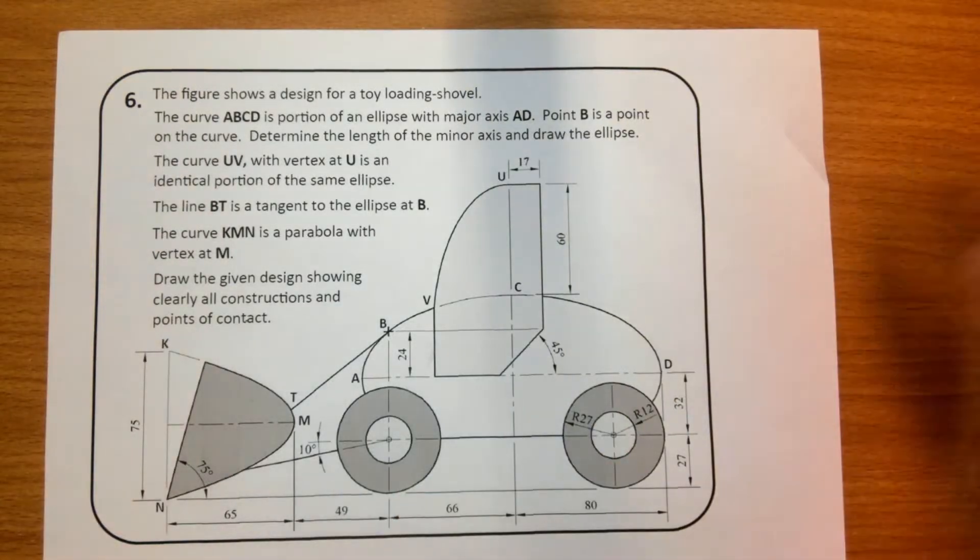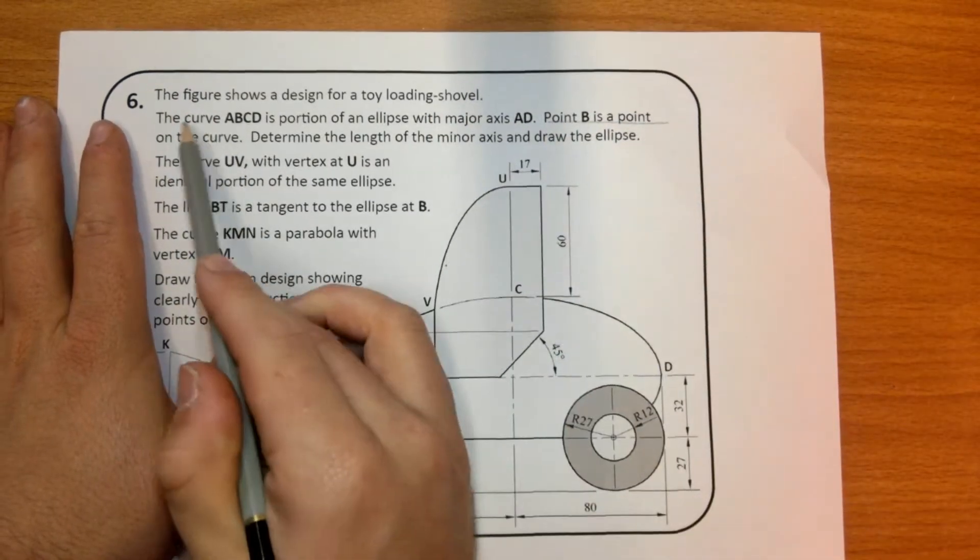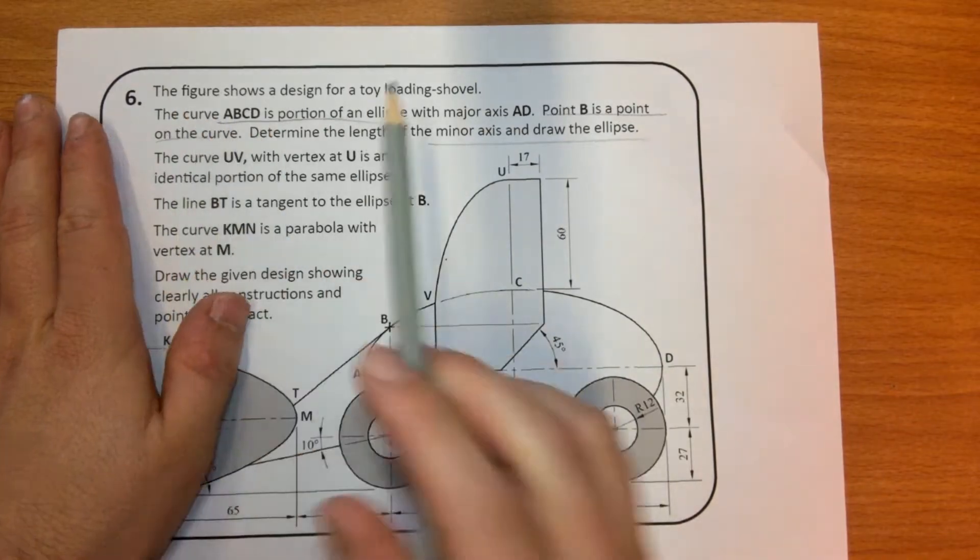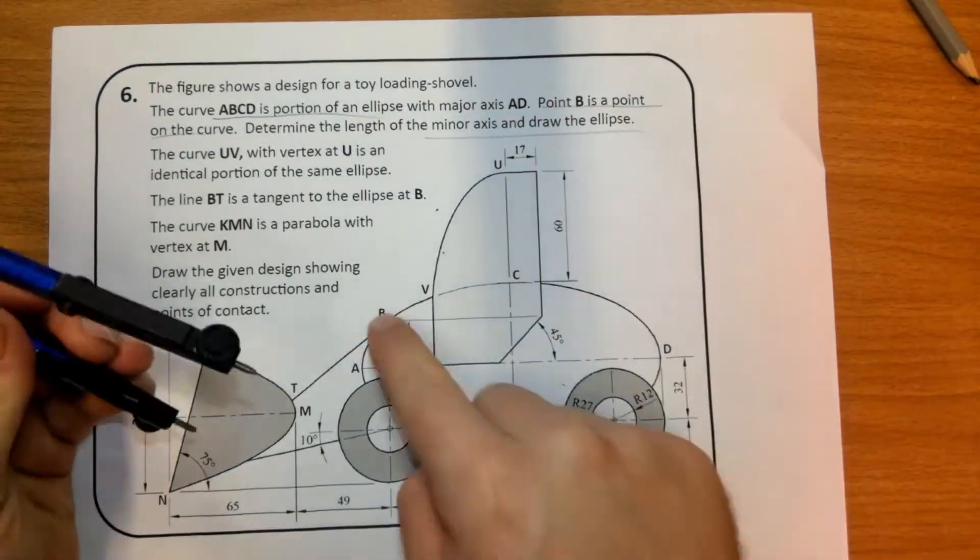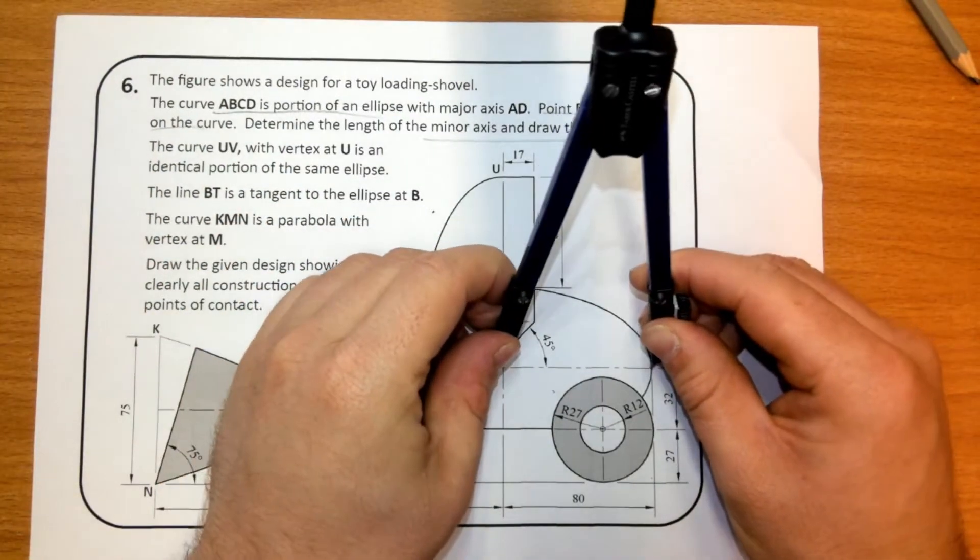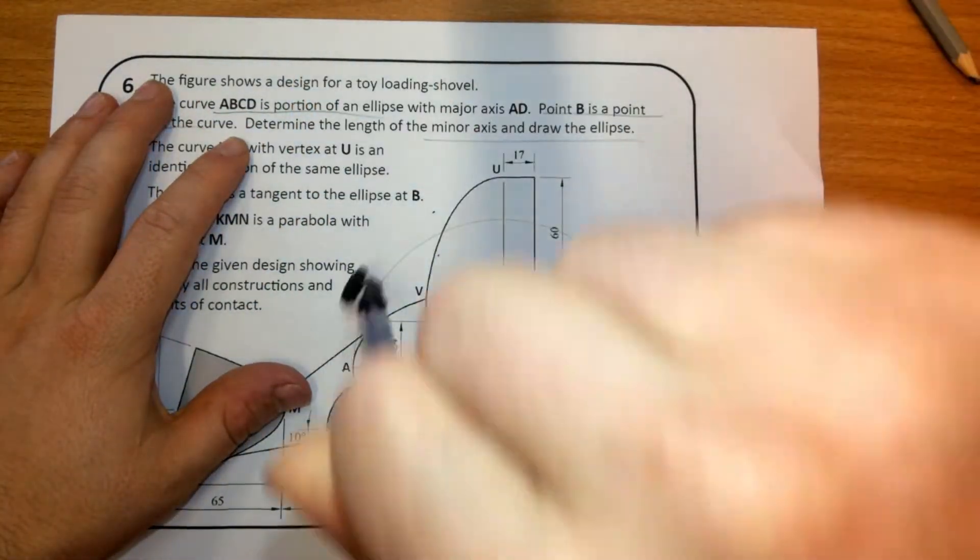The concept behind getting the minor axis: on the curve to determine the minor axis and draw the ellipse, you have your major axis and you plot the major axis with point B on it, then you draw in your major circle.